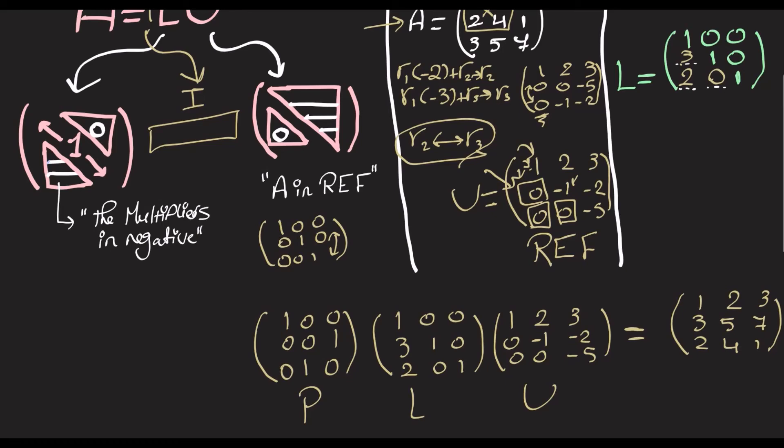When we multiply these three now, we're going to get A. So, these two will be swept back. They will be 2, 4, 1, and 3, 5, 7. And this is just the PLU decomposition.